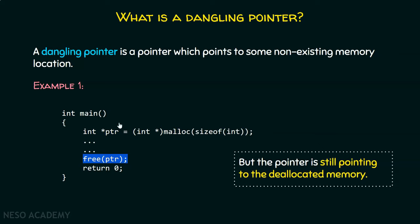Please see the definition once again: a dangling pointer is a pointer which points to some non-existing memory location. When you free the memory, when you release the memory, the pointer becomes dangling because it is pointing to a non-existing memory location. After de-allocating the memory, the memory doesn't exist, but the pointer is still pointing to that memory. This is called a dangling pointer.